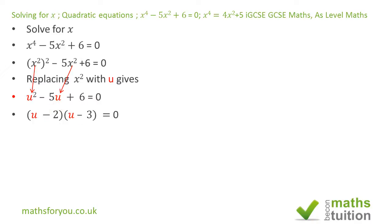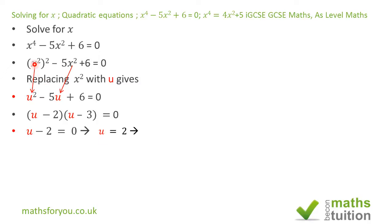Equating each factor to zero: u minus 2 equals 0, which means u equals 2. Do not forget that u is x squared, so x squared equals 2, and therefore x equals plus or minus the square root of 2.